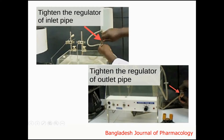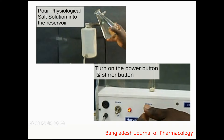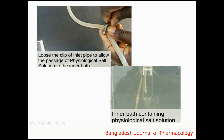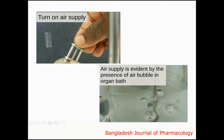Tighten the regulator of the inlet pipe, then tighten the regulator of the outlet pipe. Pour physiological salt solution into the reservoir. Turn on the power button and stirrer button, and set the temperature knob to the desired temperature. Loosen the clip of the inlet pipe to allow the passage of physiological salt solution to the inner bath. Then turn on the air supply; the air supply is evident by the presence of air bubbles within the organ bath.